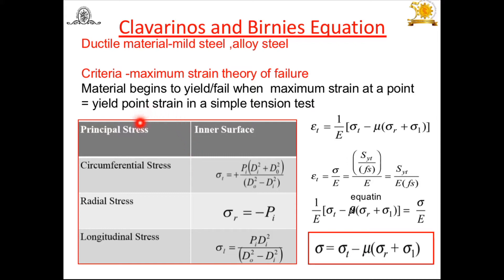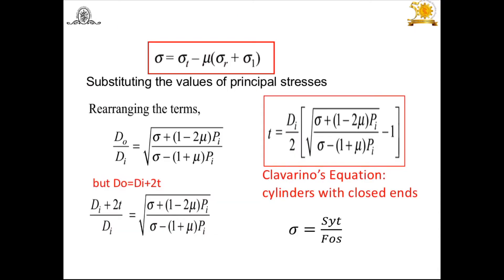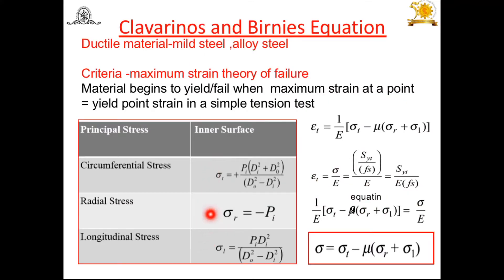At the inner surface, the stresses induced in the thick cylinder are as already derived. According to the maximum strain theory, the tensile strain is given by (1/E) * [sigma_t - mu * (sigma_r + sigma_l)], and this strain equals sigma/E by Hooke's law. Equating these two expressions gives: sigma = sigma_t - mu * (sigma_r + sigma_l). We then substitute the values of sigma_t, sigma_r, and sigma_l (longitudinal stress).